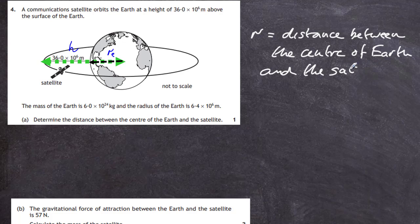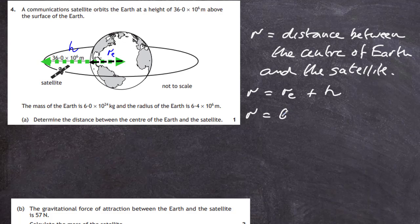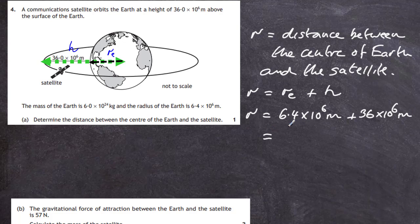We can write the equation: R equals the radius of the Earth plus the height the satellite is at. Plugging in the numbers: the radius of the Earth is 6.4×10⁶ m, and we add on the height of the satellite, which is 36×10⁶ m. Working that out gives an answer of 42.4×10⁶ m.